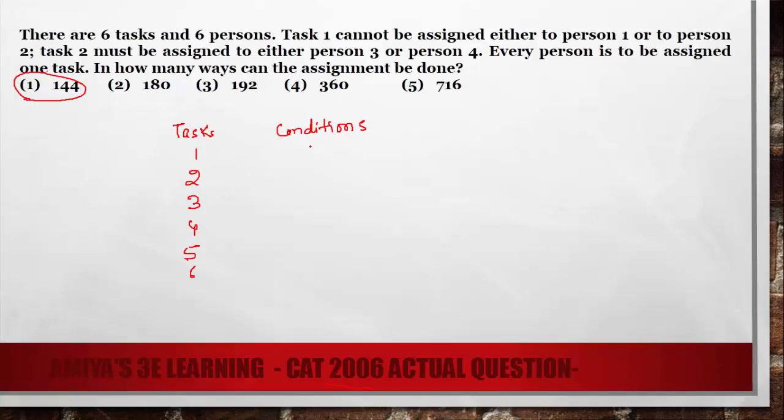What are the conditions? Task 1 cannot be assigned to person number 1 and person 2. Task 2 must assign either person 3 or 4. These are the conditions. First we have to check task 1 and task 2 because in this we have few conditions. And rest are conditionless.